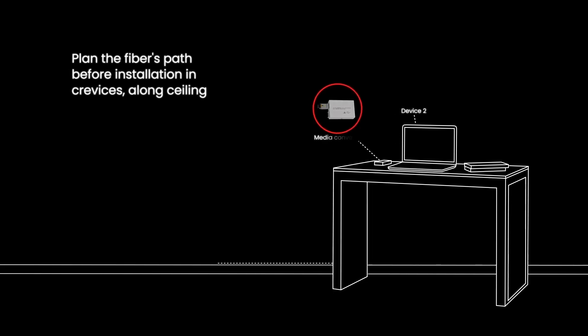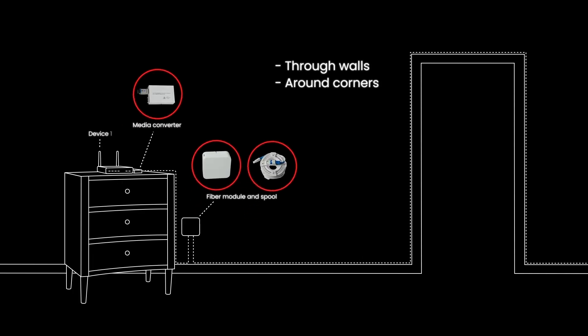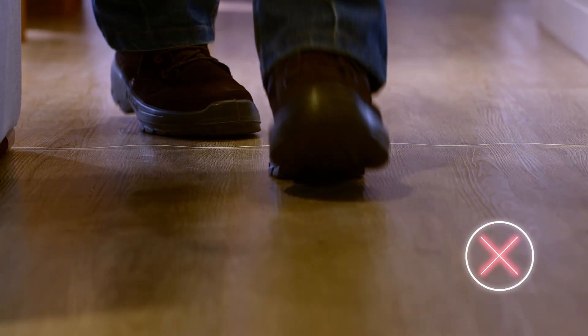It's important to plan the fiber's path before installation. It's most often installed along baseboards and crown moldings. It can be installed through walls or around corners as needed. It can also be installed through doorways. Just ensure there is enough clearance so the door doesn't pinch the fiber. Ensure that the fiber is not in the way of people or pets, avoiding the risk of being stepped on.